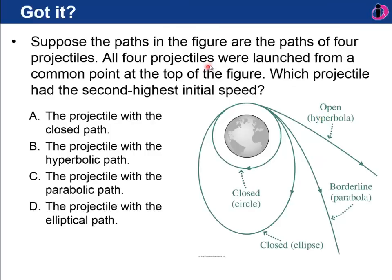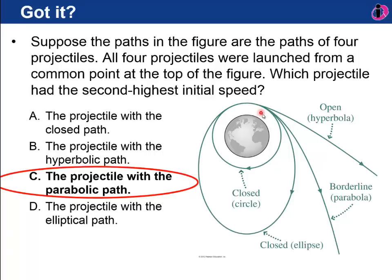So let's do a quick question for you. Suppose you look at all these paths there are four projectiles all launched from a common point right where the red dot is there. Which projectile had the second highest initial speed? I'll let you read through the answers. Press pause and then I'll tell you the answer. Okay it was this one, the highest speed was the highest energy was the hyperbola, the second highest would be this parabola, third highest would be the ellipse and fourth highest would be the closed circle.